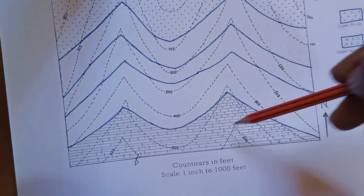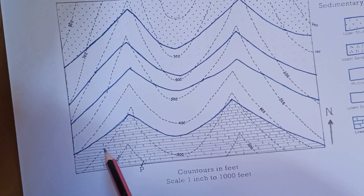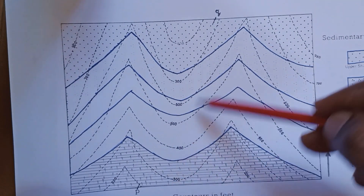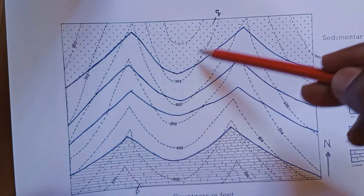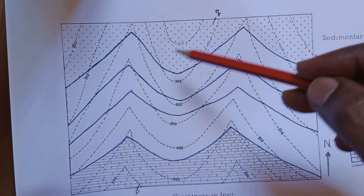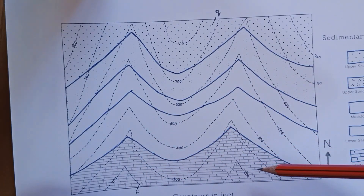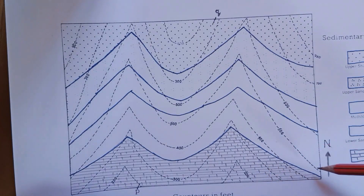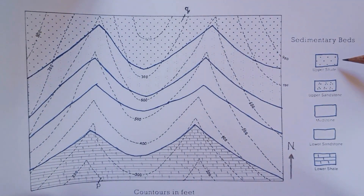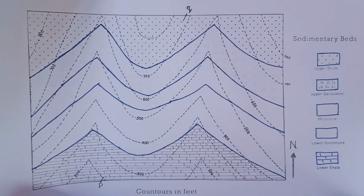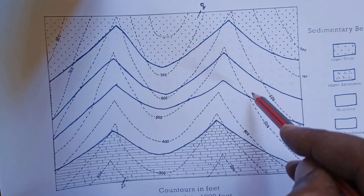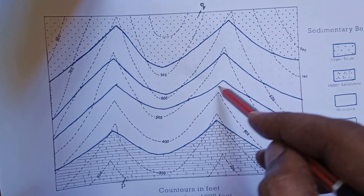The scale is 1 inch equal to 1000 feet. The geological formations are shown as outcrops. In the map, nothing is given other than the contours and the outcrops. The geological formations are shown in blue color lines, and the sedimentary bed details are given.